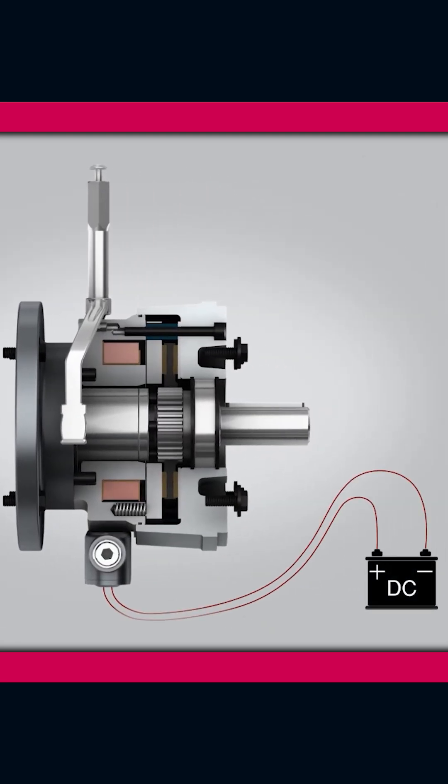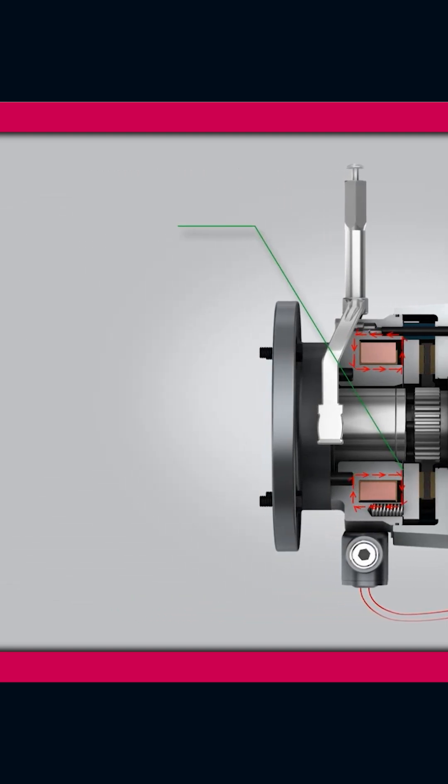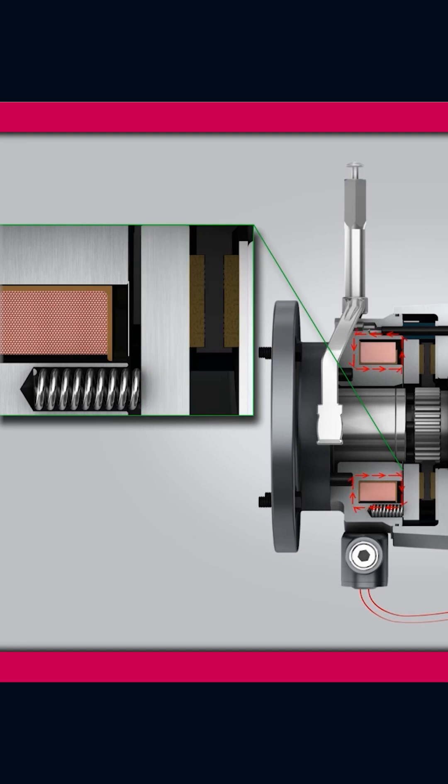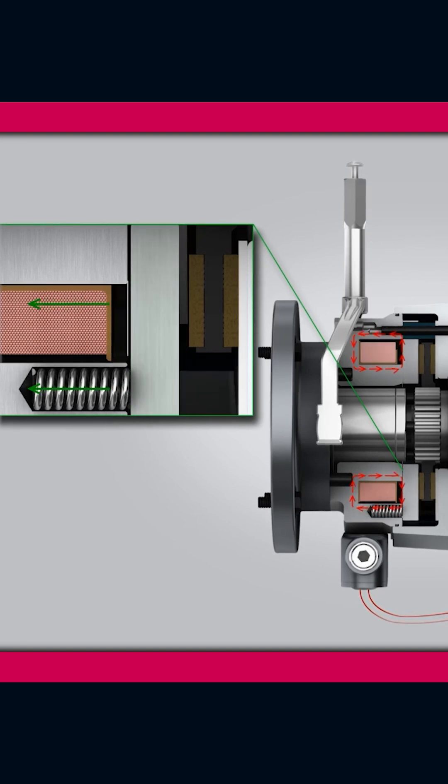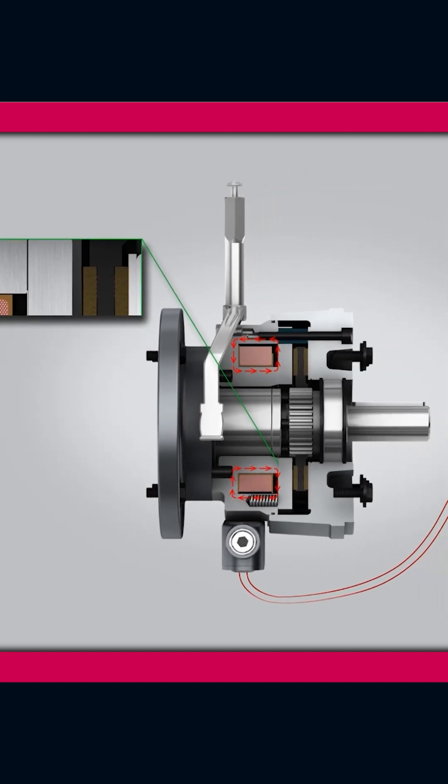Here's how the brake works. When DC voltage is applied to the magnet coil, a magnetic field is created. The magnetic force pulls an armature across a small air gap and compresses the multiple springs embedded in the magnet housing.